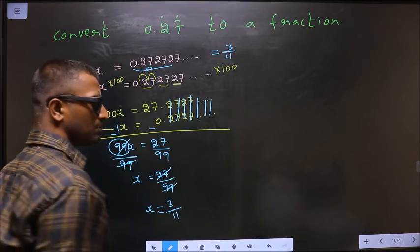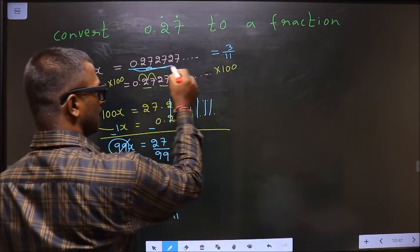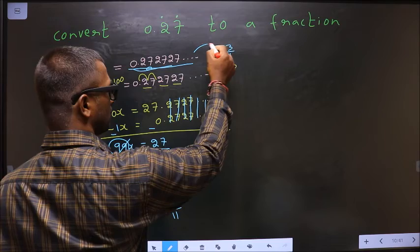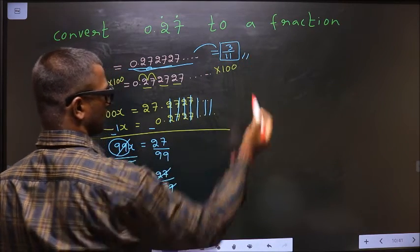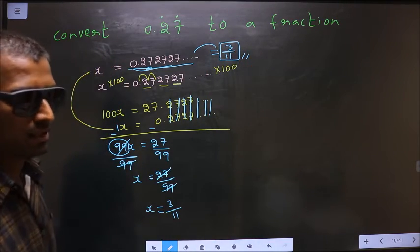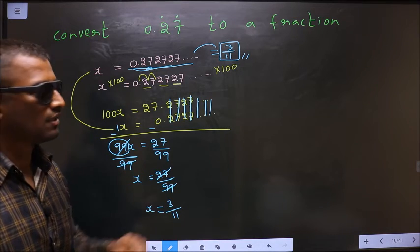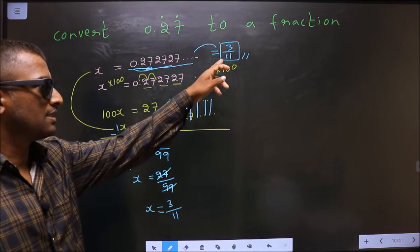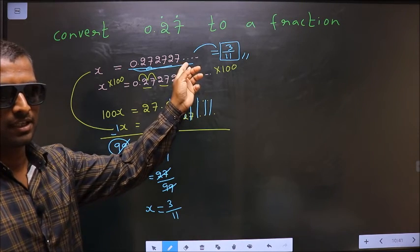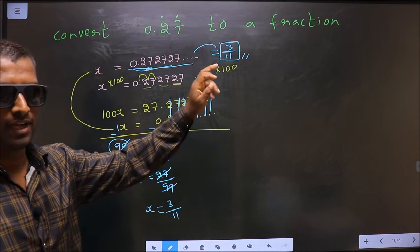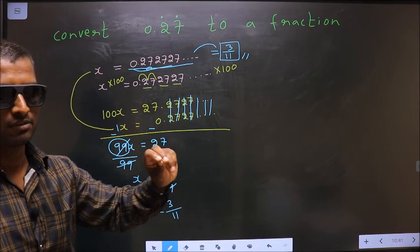This implies that 0.272727... equals 3 by 11. Thus I have converted this recurring decimal to a fraction — this is our answer. If you wish to confirm, place 3 by 11 in the calculator and you should get this decimal back. If you get this, your fraction is correct; otherwise not.